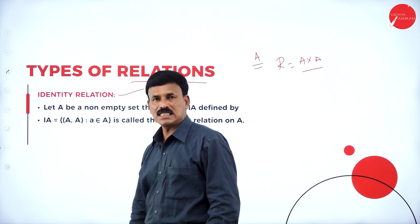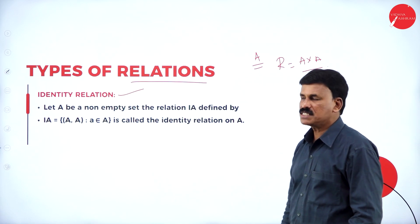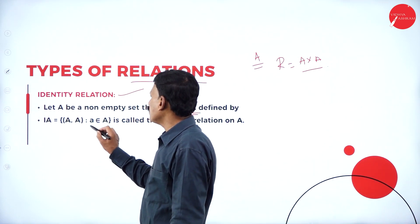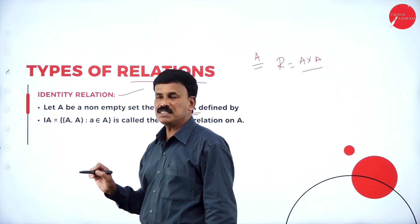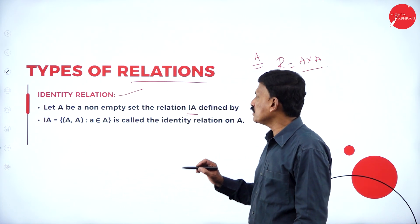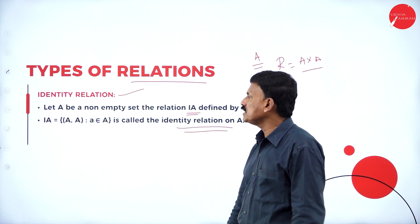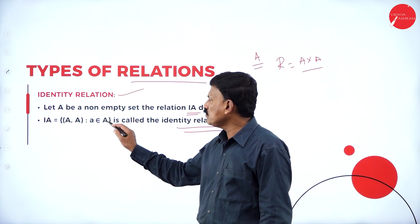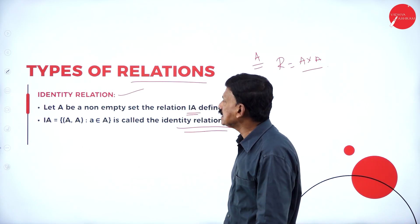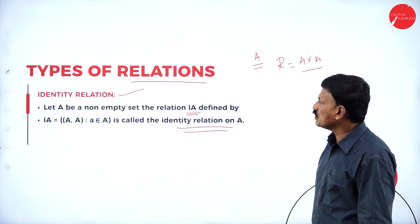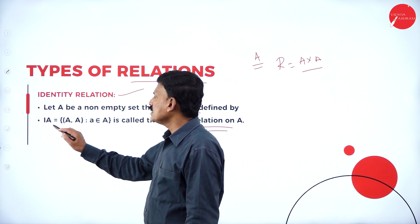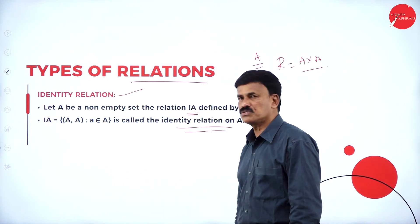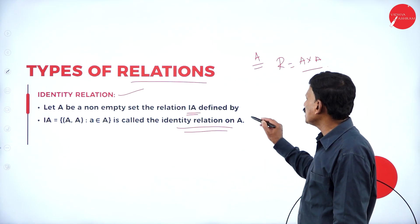The first type is the identity relation. Identity relation means: let A be a non-empty set. If A is any non-empty set, then the relation I(A) is defined by I(A) = {(a, a) such that a belongs to A} — for example, {(1,1), (2,2), (3,3)} — and this is called the identity relation on A.